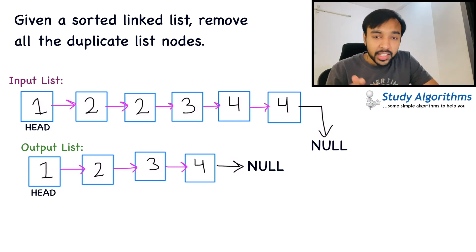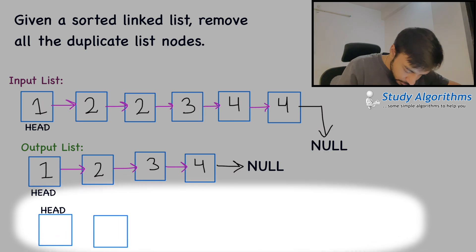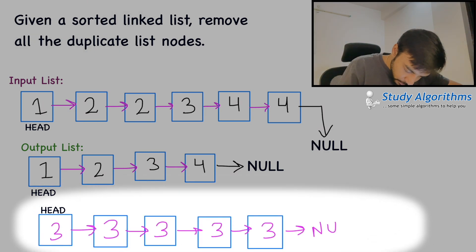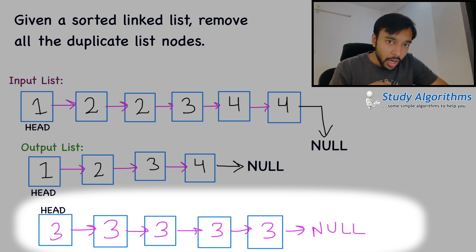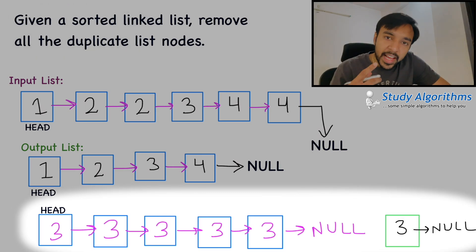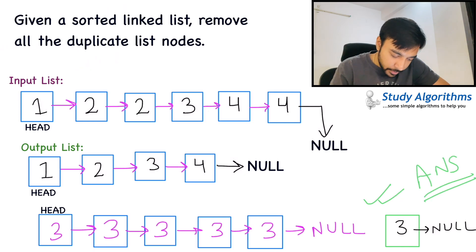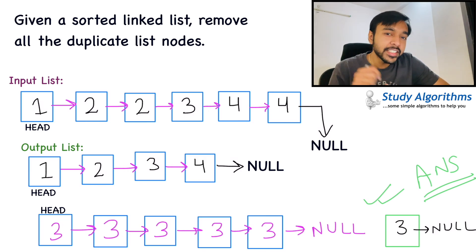If no elements are repeated, then the size of your output linked list would be the same. However, if you have a case something like this — where the element 3 is repeated throughout — as per your output, you would have only one node, and this single node would be your answer. Now, if you have understood the problem statement correctly, feel free to try it out on your own. However, if you are still facing difficulties, let us dive into the solution.